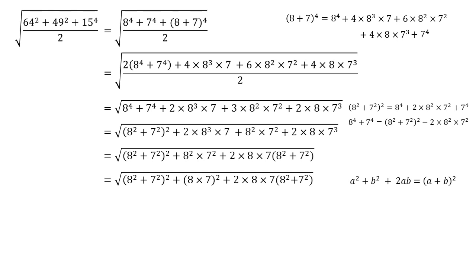So we can convert this now using our 8 squared plus 7 squared as a and our 8 times 7 as b. We'll end up with the square root of 8 squared plus 7 squared plus 8 times 7 all squared. But the square root and the square will cancel out.